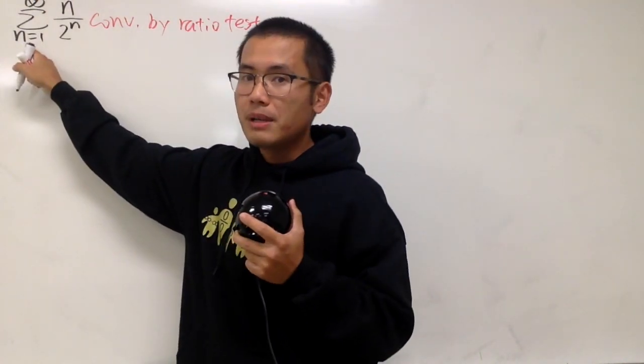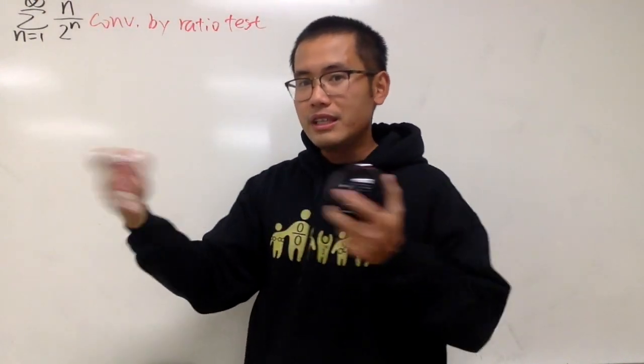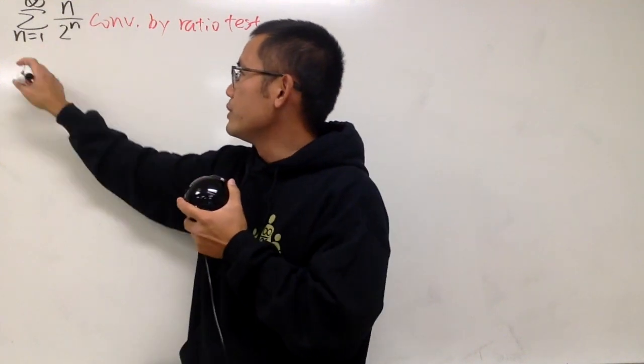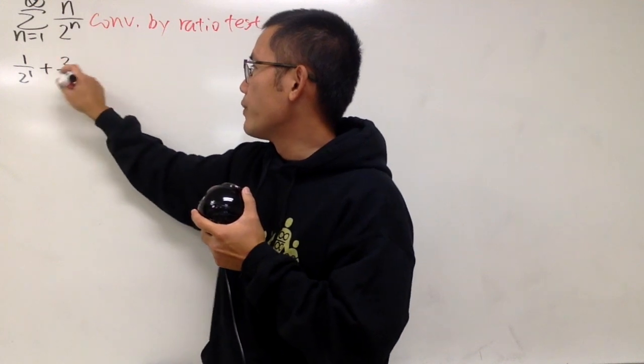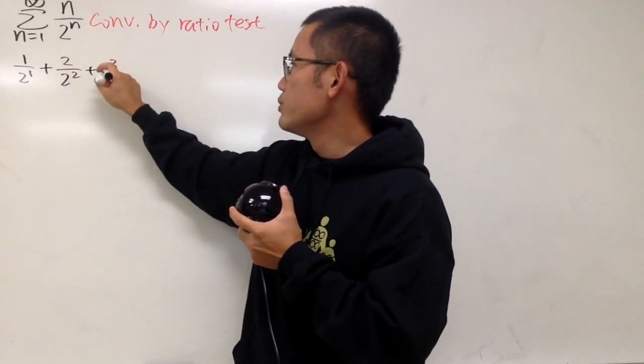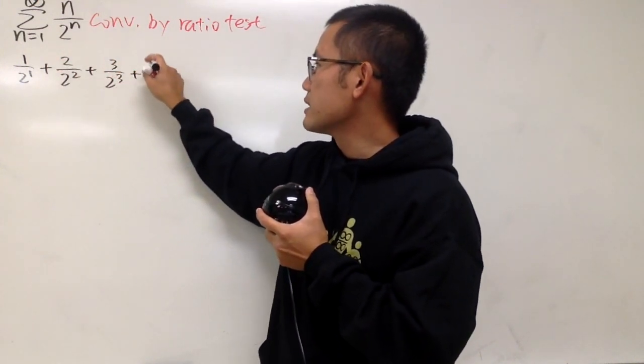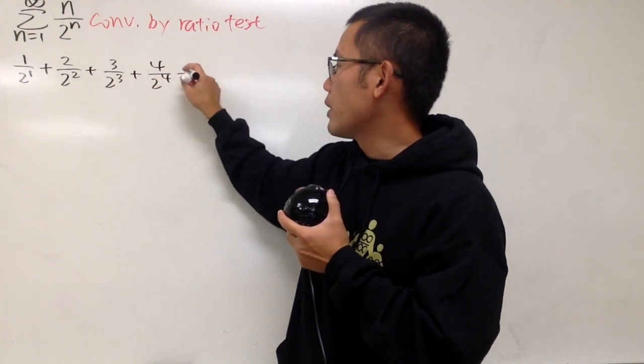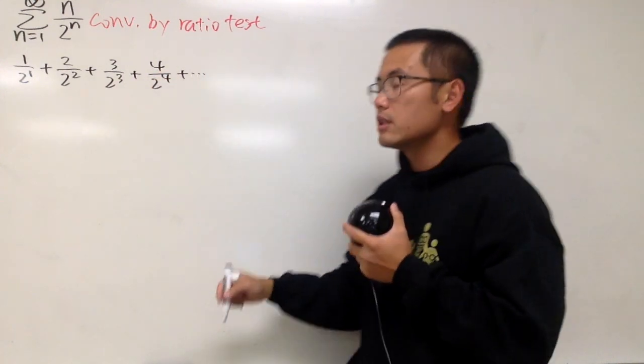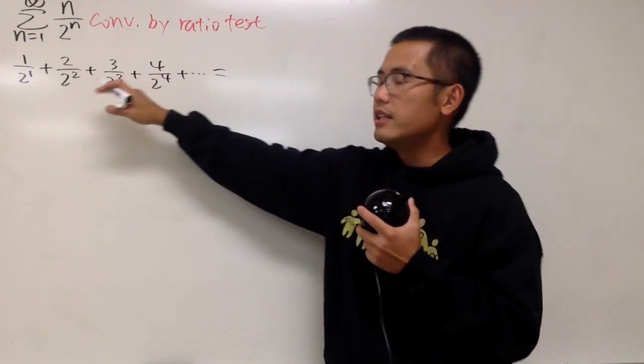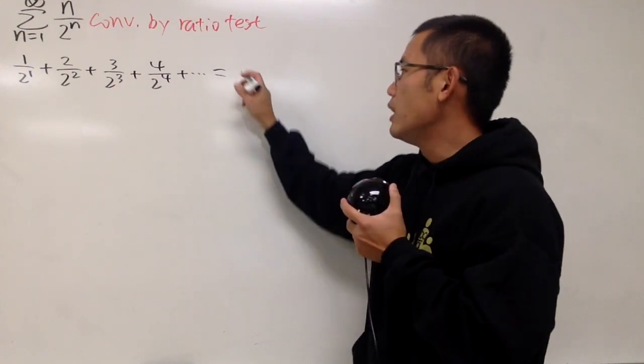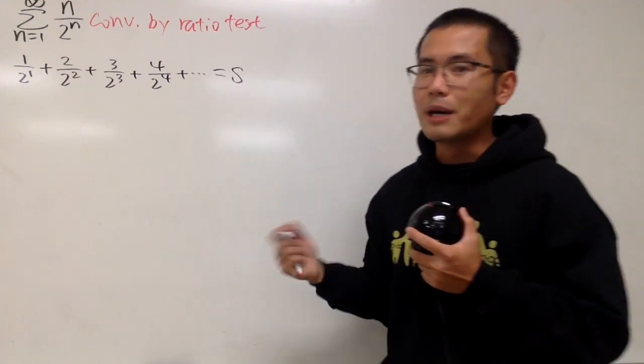So, what we do first is just plug in some n values and just expand it. I will put in 1 into the n, so we have 1 over 2 to the 1st power, and then we just continue, plus 2 over 2 to the 2nd, plus 3 over 2 to the 3rd, plus 4 over 2 to the 4th power, and so on, of course. And because we know this right here does converge, we can say this right here is equal to some finite value, I will just call that to be S. It stands for sum.